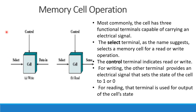This is basic memory cell operation. The first terminal is for selecting; the second terminal is the control terminal for read or write; and the third terminal is data in or sense. For writing, it is data in — it will set the memory state. For reading, it is data out — it will sense the state of the cell.